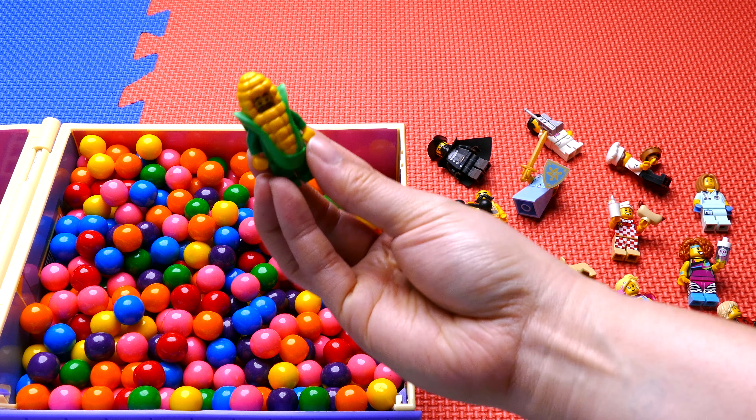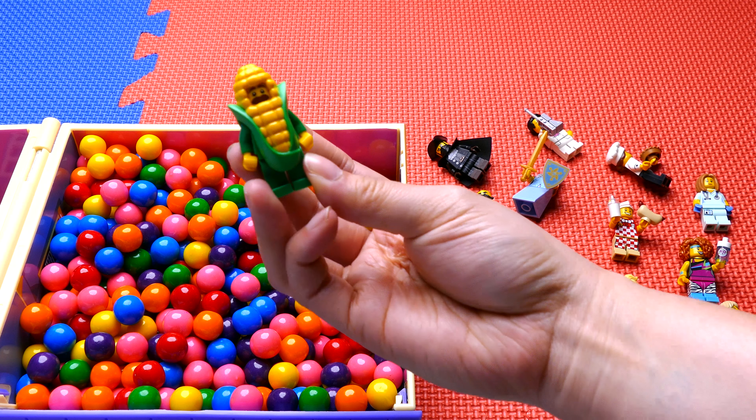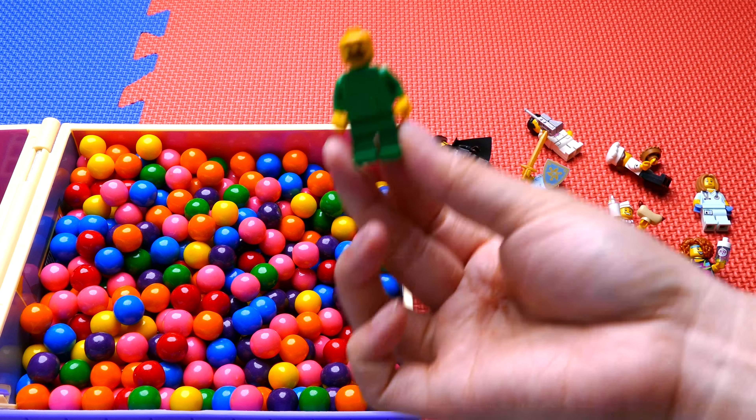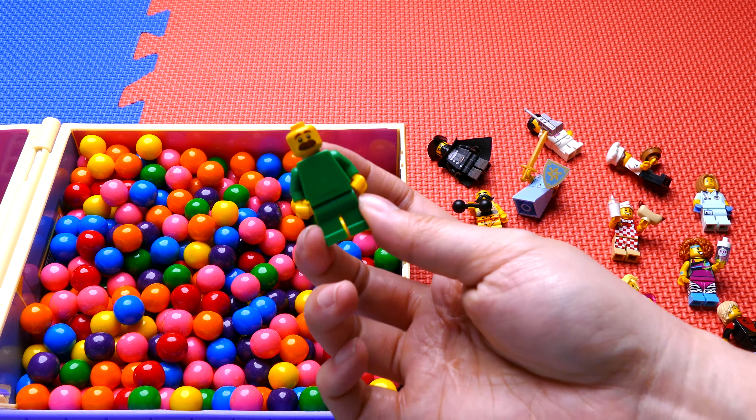He likes to promote corn because corn is yummy and sweet. This is his corn suit. You can take it off and he's just wearing a green shirt and he has a mustache.